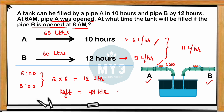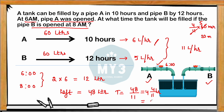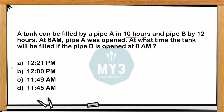Together A and B fill 11 liters per hour. Time to fill 48 liters = 48 ÷ 11 = 4 and 4/11 hours. Converting 4/11 hours to minutes: (4/11) × 60 ≈ 20 minutes. So after 8 AM it takes another 4 hours and 20 minutes. 8:00 + 4 hours 20 minutes = 12:20. The answer is option A.